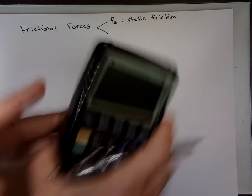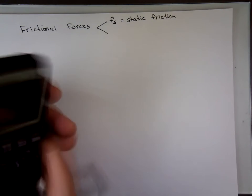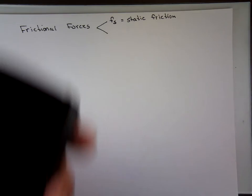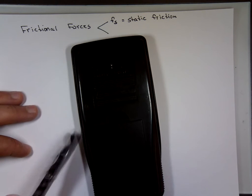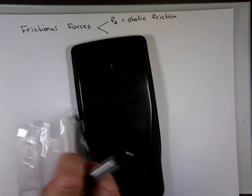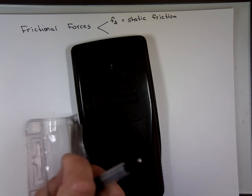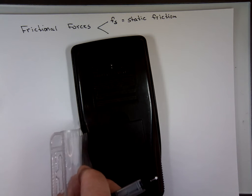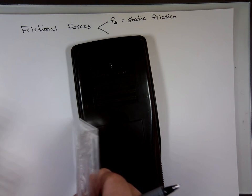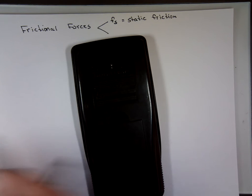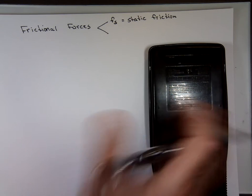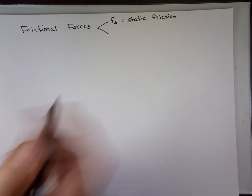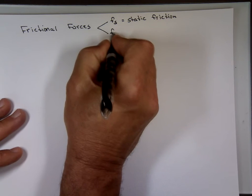Notice when you put this calculator right there - I'm pushing on it, but it's not moving. The reason it's not moving is there's a friction force called static friction, keeping it from moving. But if I push hard enough, it's going to move. And once it moves, static friction is no longer a factor - we have kinematic friction, F of K.